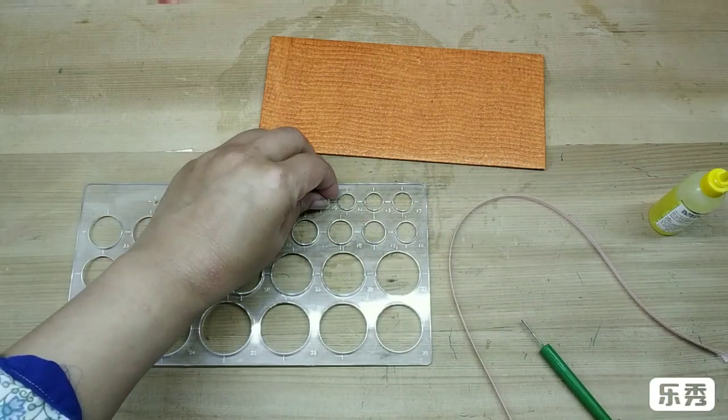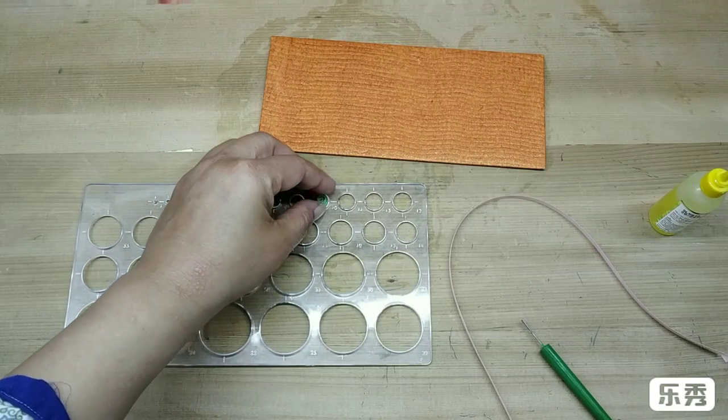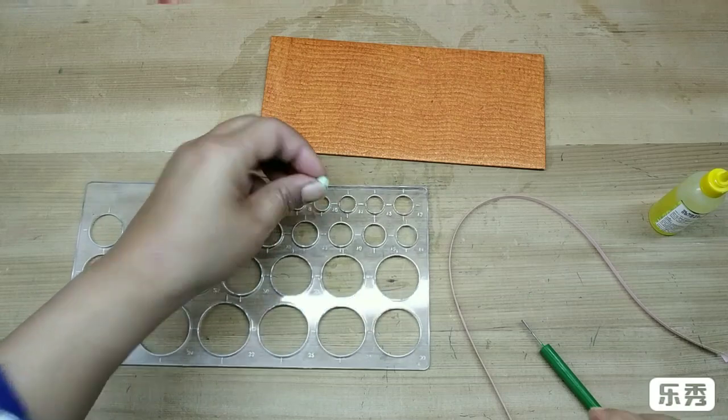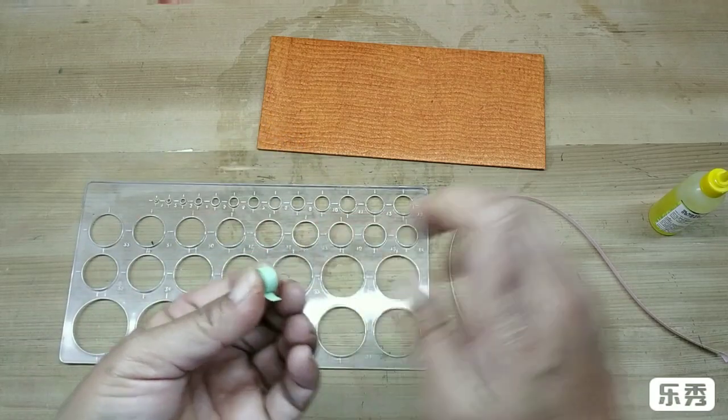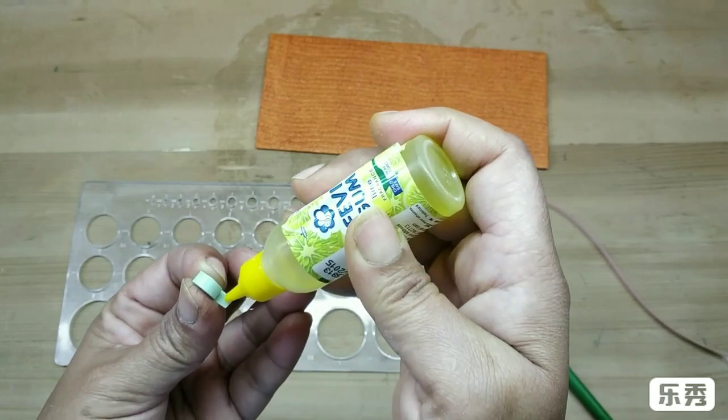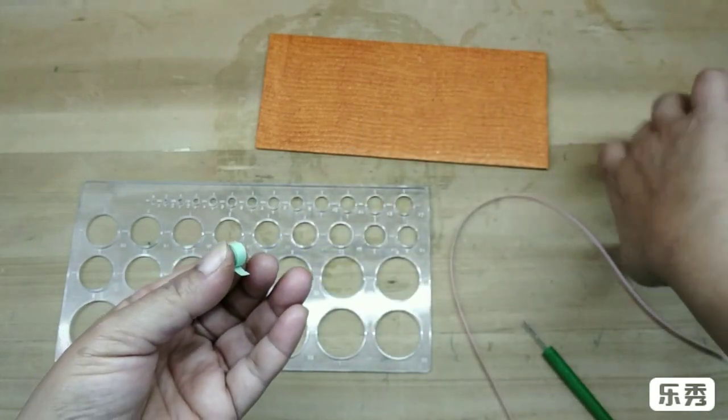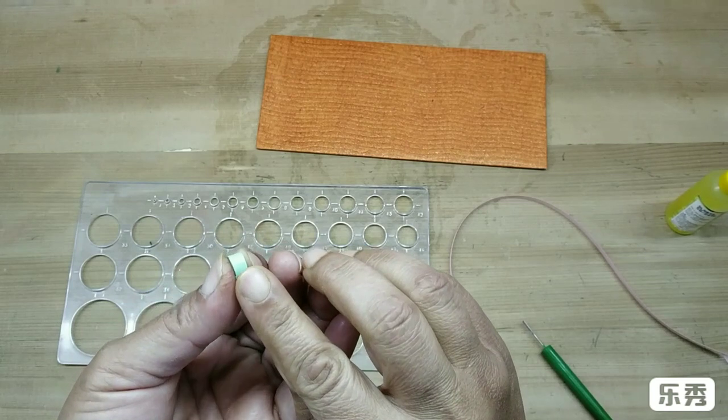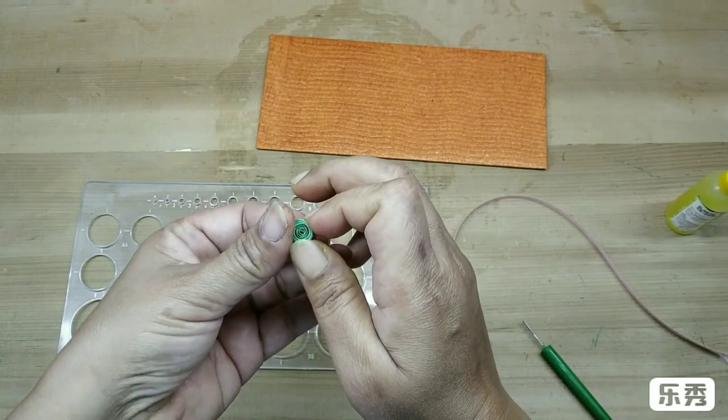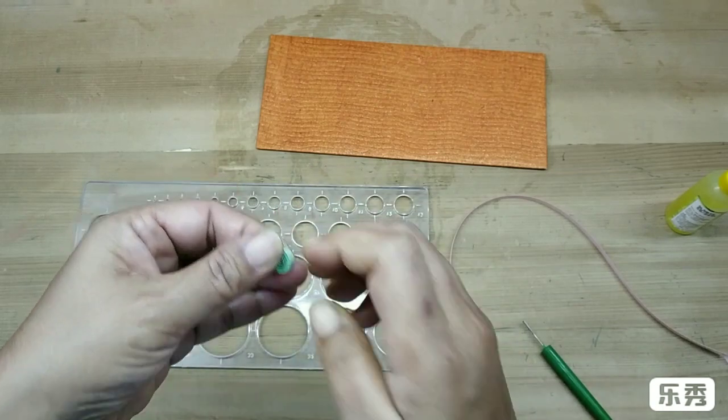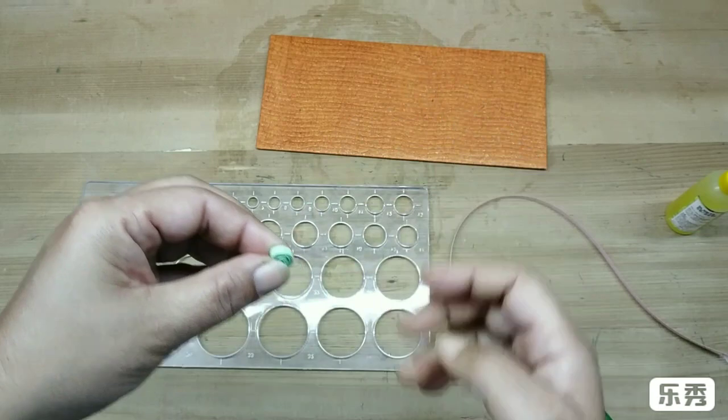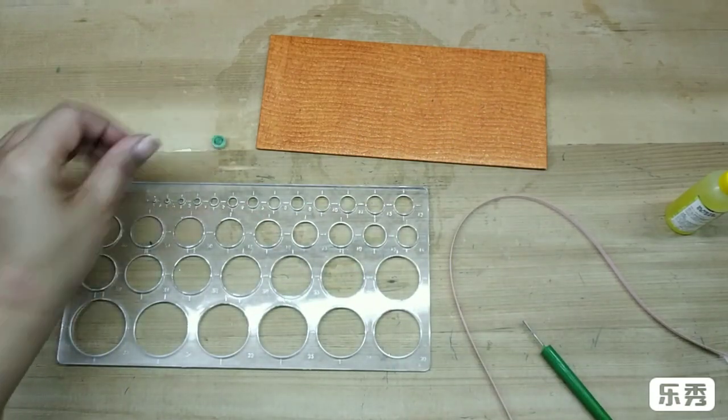Now I am going to put it in this circle. This tool helps you keep the measurement of all the quilling that you do, you know, the same size. Like so.